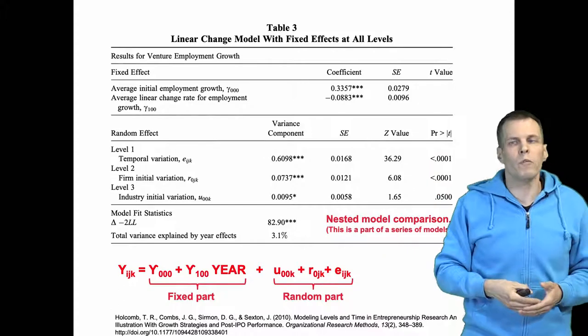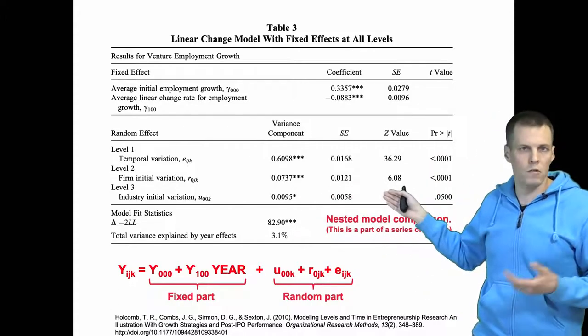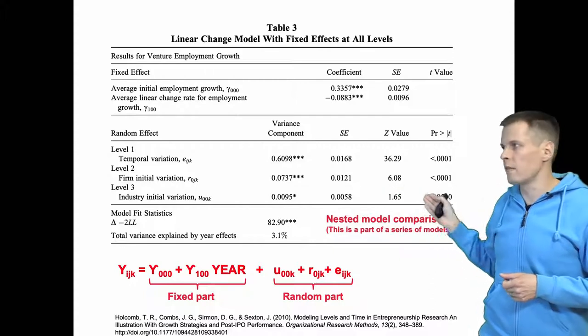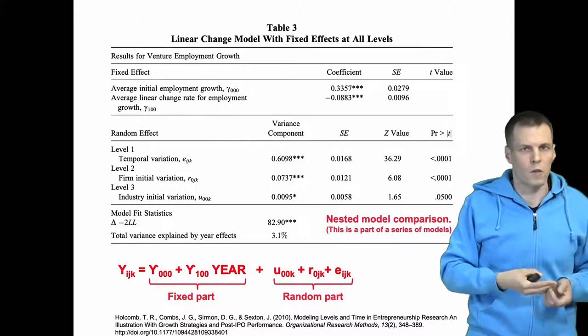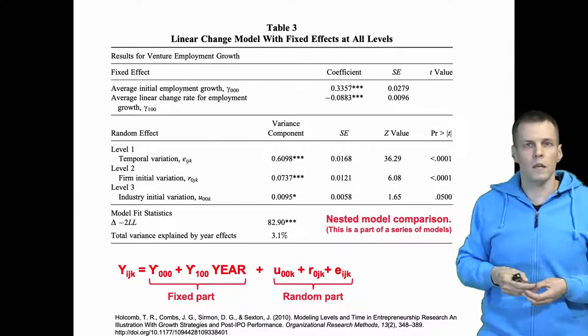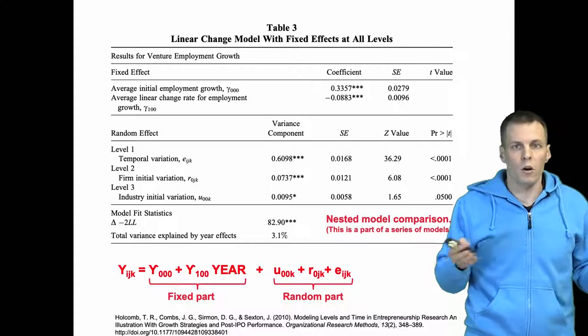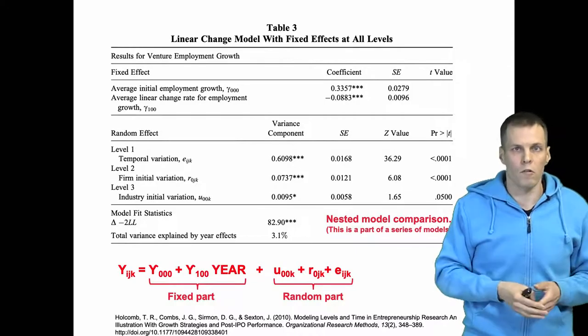We report our estimates, standard errors, z or t values depending on the model, and p values for all sets of coefficients. The t values are for some reason missing in this table, but they are present in all other tables, so that is probably a copy paste error or a layout error in the article.